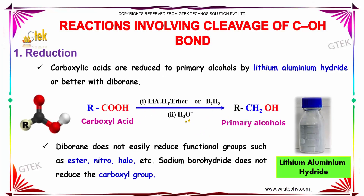Reduction reactions: Carboxylic acids are reduced to primary alcohols by lithium aluminum hydride, or better with diborane. However, diborane does not easily reduce other functional groups such as ester, nitro, or halo groups.